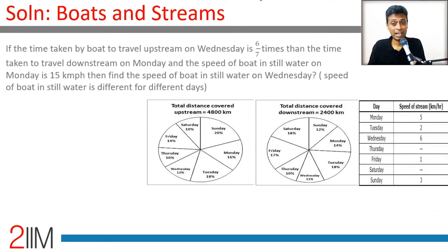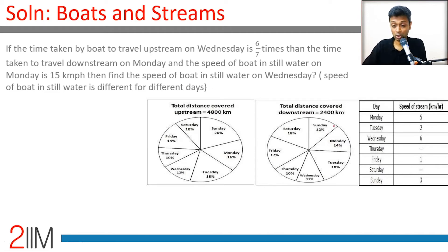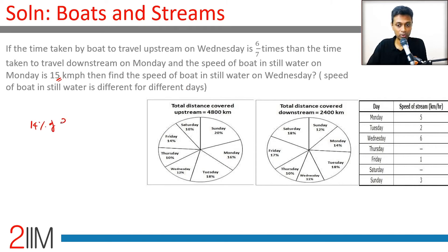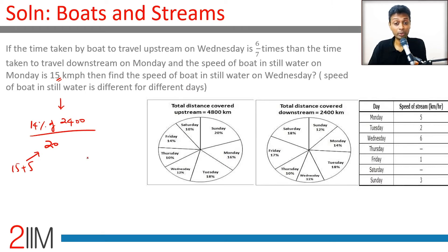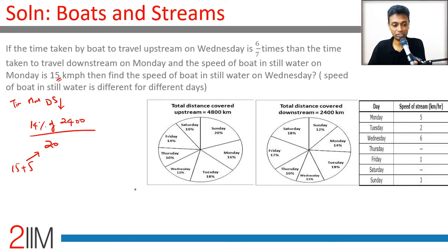For Monday: the Wednesday upstream time is 6/7 of Monday downstream time. Monday's downstream distance is 14% of the total 2400 km downstream. The stream speed on Monday is 5 km/h, and the still water speed is 15 km/h, so the downstream speed is 15 + 5 = 20 km/h. Distance = 14% of 2400 km.